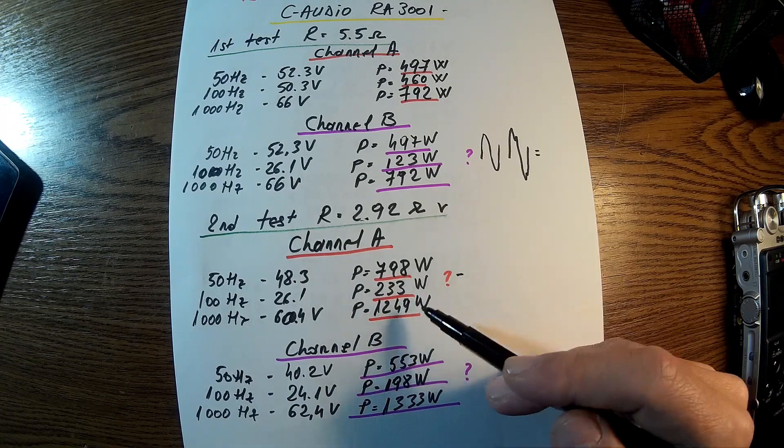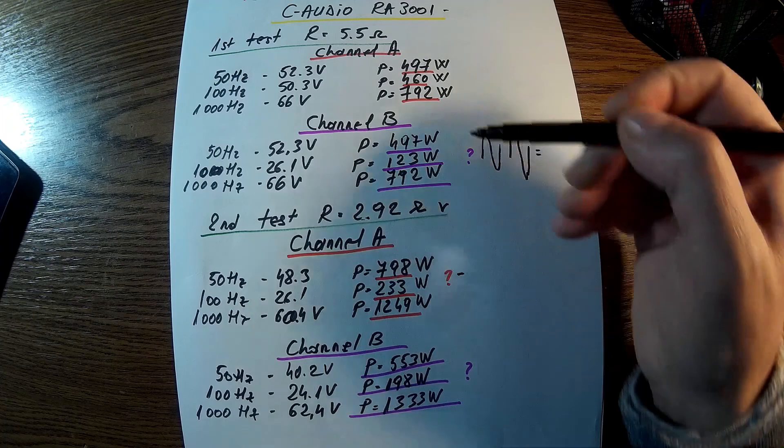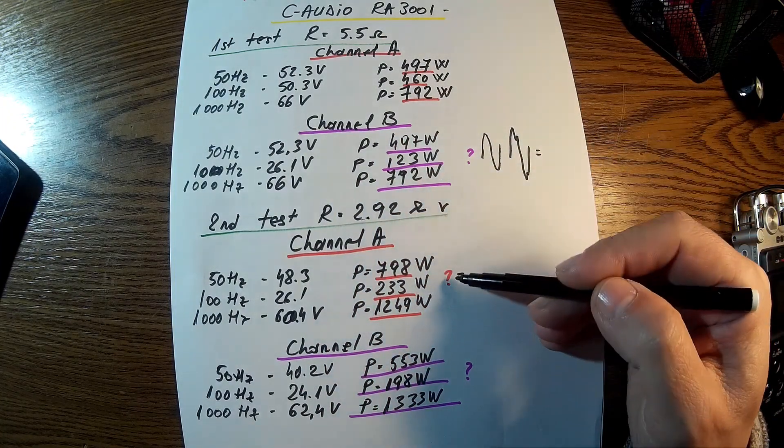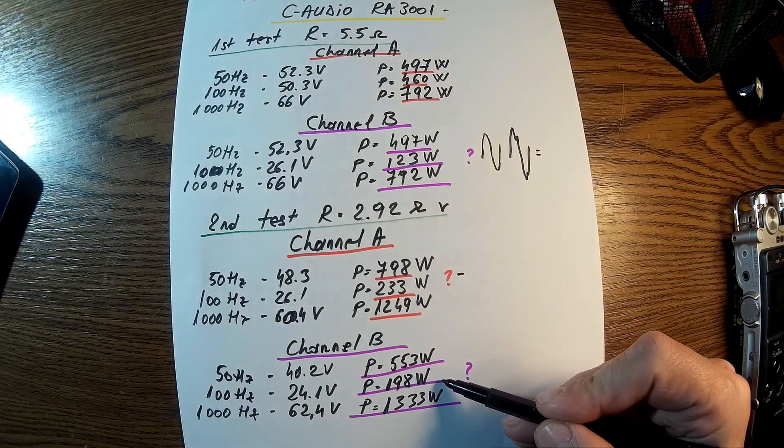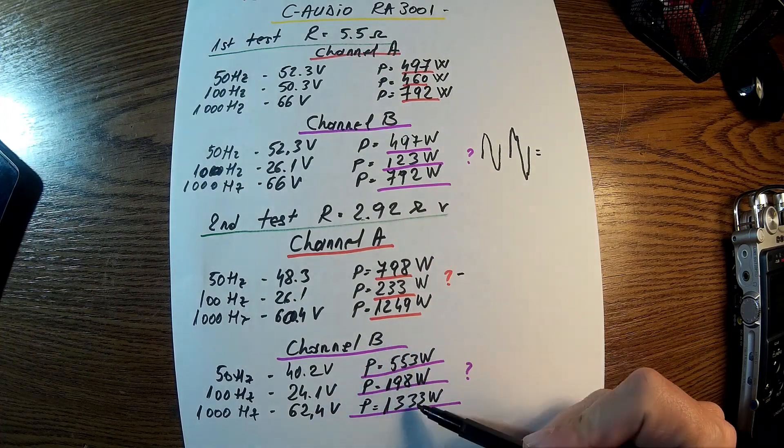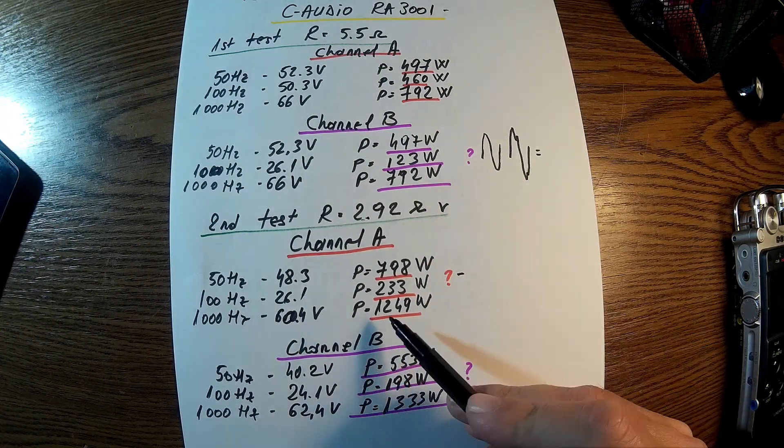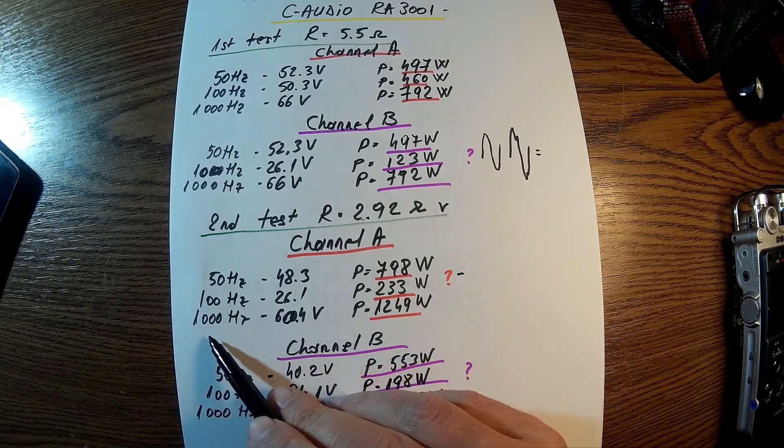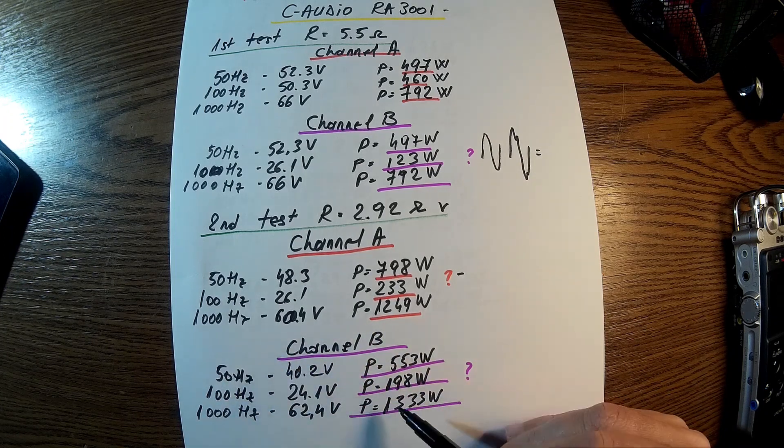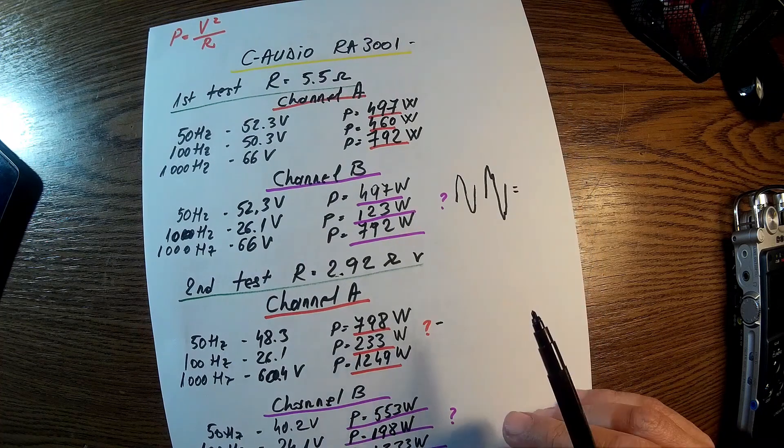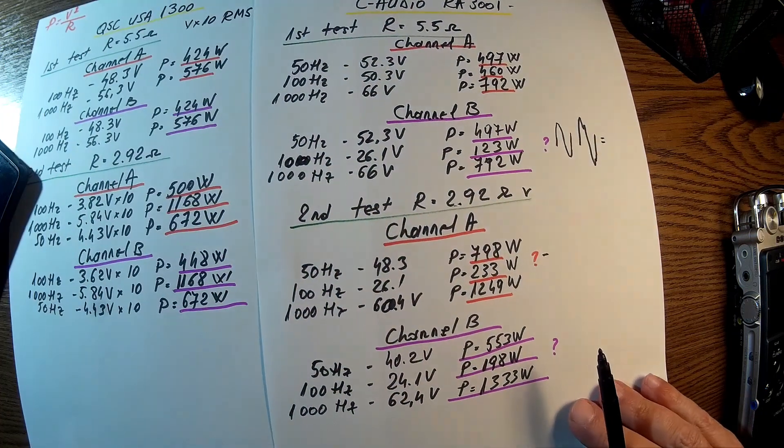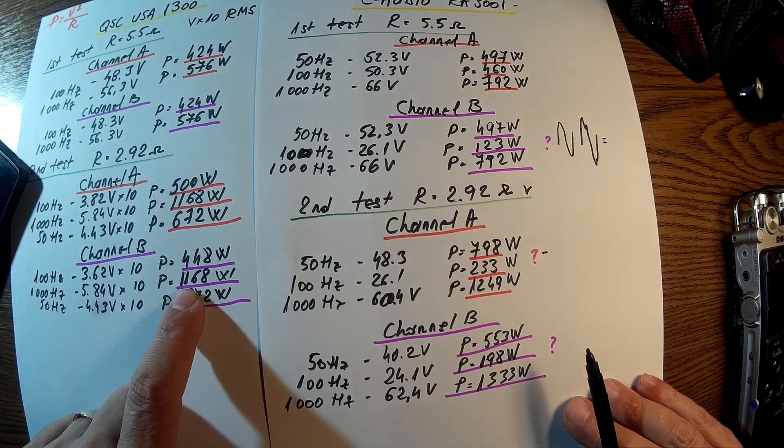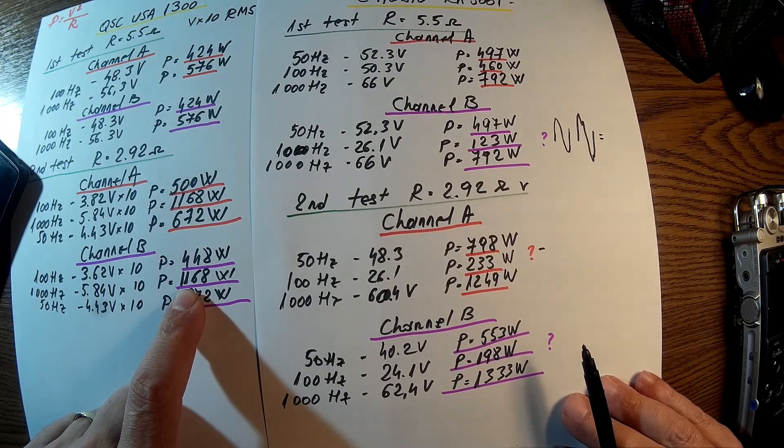For sure there is a problem with the electrolytics. And you see, channel A and channel B is behaving even worse. But what's funny, for 1000 hertz here at 2.92 ohms, I have more than QSC. This is interesting.